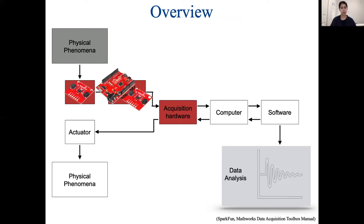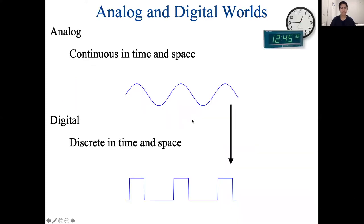Next is the data acquisition stage, where the electrical signal must be converted to a language that the computer can understand so it can be stored. Up until this point we've been talking about an analog signal, which is continuous in time and space. In order to store data in a computer, it has to be digitized — made discrete in time and space. Some sensors already give us a digital signal, for example some accelerometers give us g-forces directly, but not all sensors do, so we may have to convert from analog to digital.